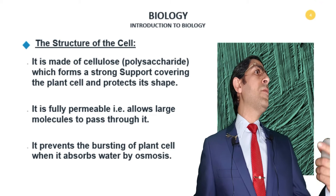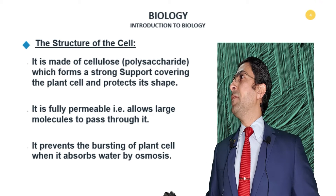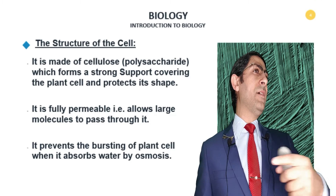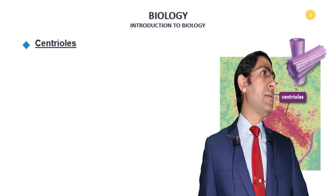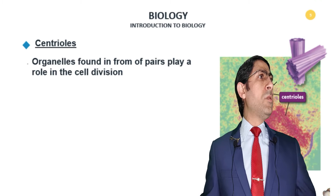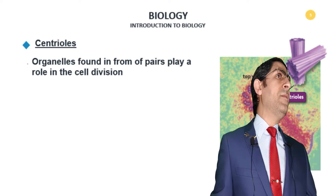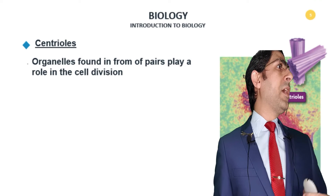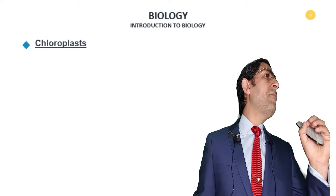Now we're going to talk about the ultrastructure of the cell. First, the cell wall. It's made up of cellulose, which is a kind of polysaccharide — a polymer of mono and disaccharides — which forms a strong support to the plant cell and protects its shape. It limits and gives the plant cell its fixed shape. The cell wall is fully permeable, unlike the plasma membrane which is partially permeable.